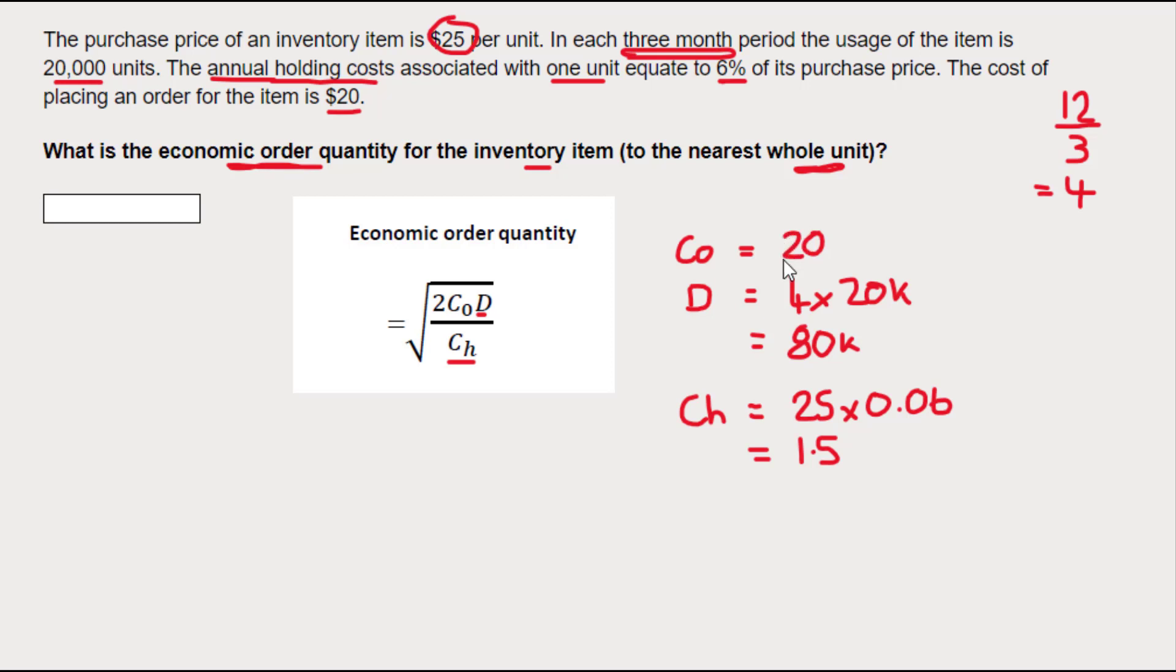So now I've got all of the numbers in the format I need them. The cost of ordering an order is $20, my annual demand is 80,000, and my cost of holding one unit for one year is $1.50. So now I just need to put my figures into the formula.